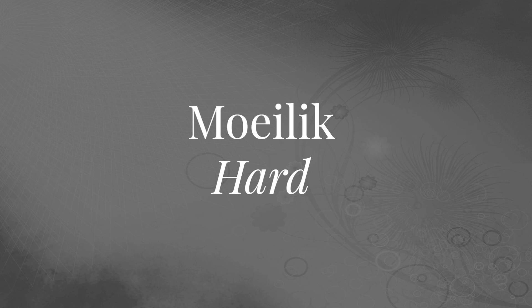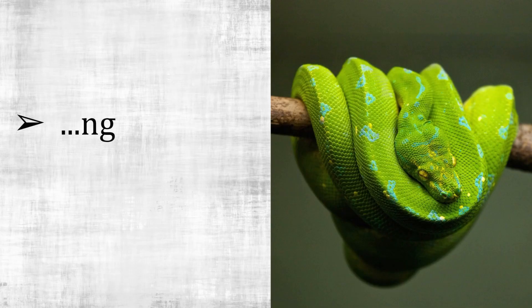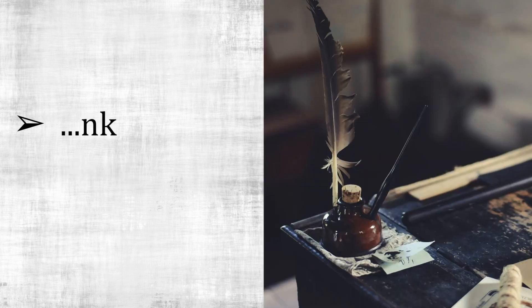On a scale of difficulty, the following sounds should fall in the hard category. The letters N and G together make one sound, and the letters N and K together make another sound.